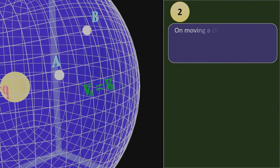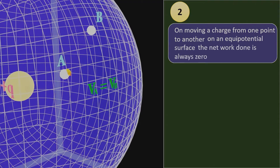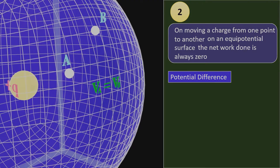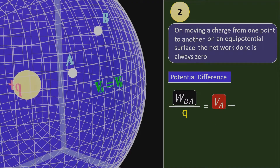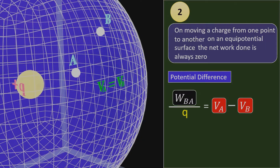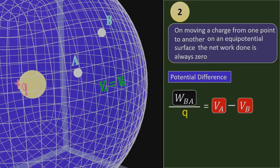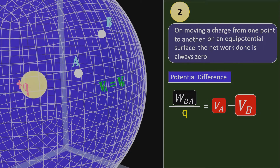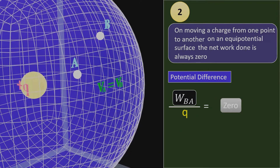Property 2: on moving a charge from one point to another on an equipotential surface, the net work done is always zero. We can understand this through the potential difference equation: work done W_BA by the charge equals V_A minus V_B. We have already discussed this relation in the first video of this chapter. Since on an equipotential surface the potential at point A, V_A, is the same as the potential at point B, V_B, therefore V_A minus V_B equals zero, and consequently the work done is also zero.